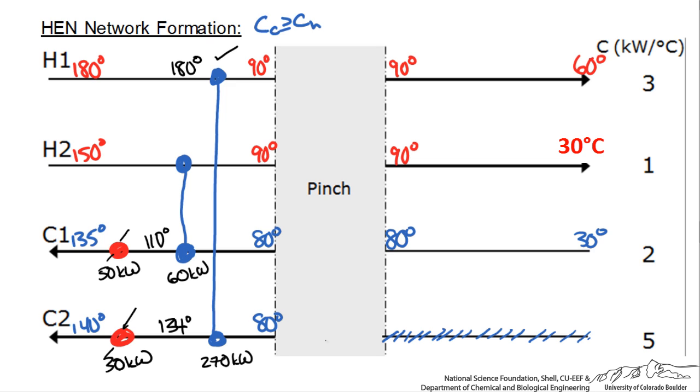Now moving to the cold side, we do the same thing and follow the rule that our hot side loads have to be greater than our cold side. We don't have a C2, we just have C1 to work with, so let's match that.